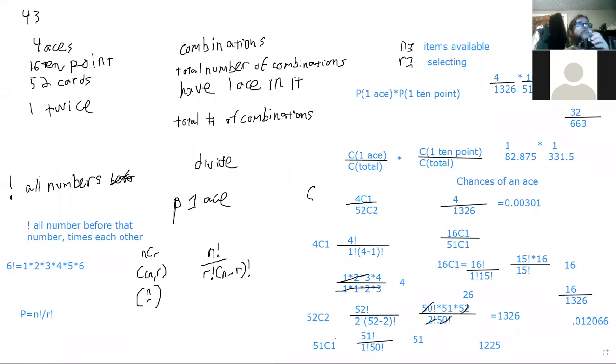I'm not entirely sure why the numbers differ, so what I'm probably going to do is look this up when I'm not here with you and record an actual, more organized answer and give it to you. I'll also do it in Excel, if anybody wants to use Excel for this. Combinations and permutations are my least favorite topic in statistics — so it's not just you guys.